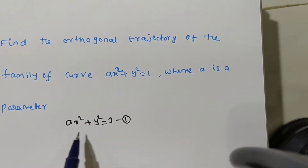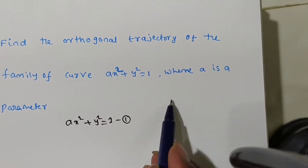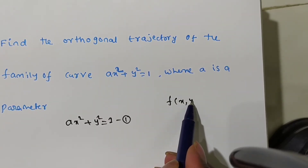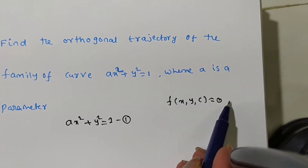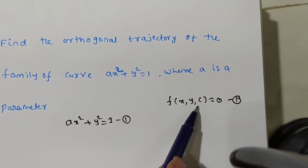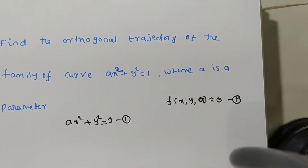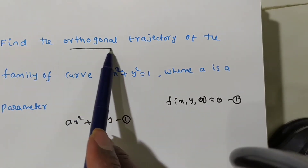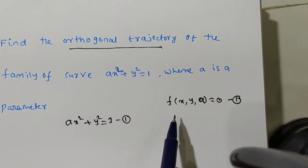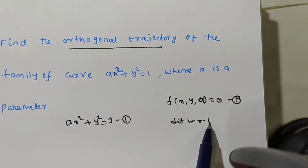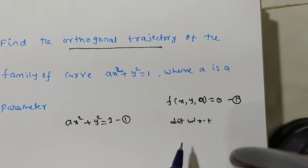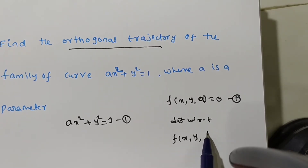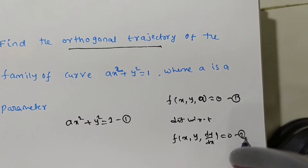X and Y variables are there, so this is in Cartesian coordinates. Generally, the family of curves is denoted as F(x, y, C) = 0, where C is a parameter — here A is the parameter. To find the orthogonal trajectory, first we find the differential equation: differentiate with respect to X and eliminate the parameter A, which gives the differential equation of the form F(x, y, dy/dx) = 0. Consider this as equation number 2.